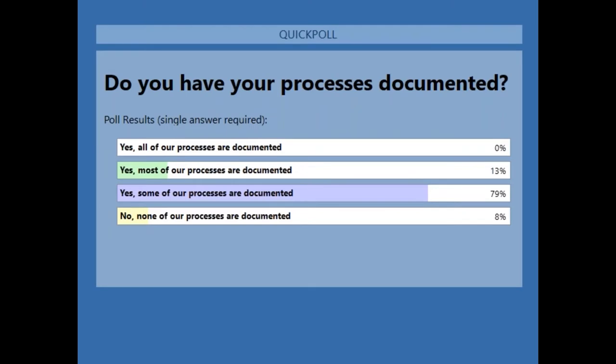0% say all of their processes are documented — fairly common, because we're so busy doing work in the business we rarely have time to keep everything documented. 13% say most of their processes are documented. 79% — the vast majority — say some of their processes are documented, but there's clearly work to be done. And 8% were extremely honest and said none of their processes are documented. Hopefully, some of what we share today will help with that.